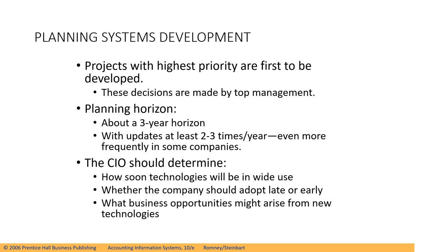In planning the system, projects with the highest priority are first to be developed. These decisions are made by top management. You also have some planning horizon — maybe a three-year plan or five-year plan, depending upon the management — with updates at least two to three times a year, even more frequently in some companies. The chief information officer or CIO should determine how soon technologies will be in wide use, whether the company should adapt late or early, and what business opportunities might arise from new technologies.